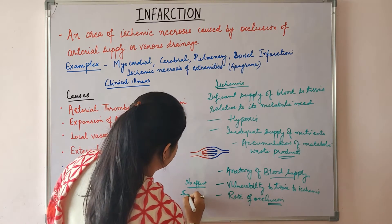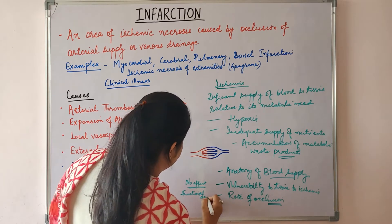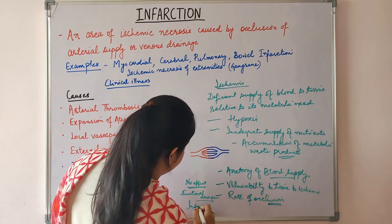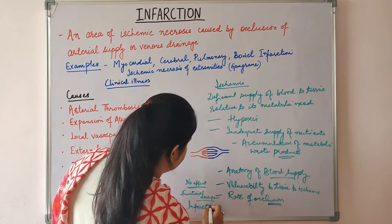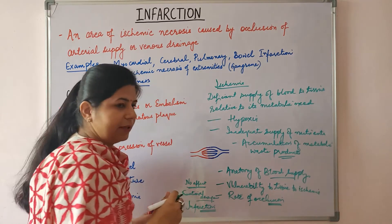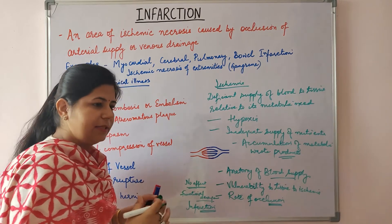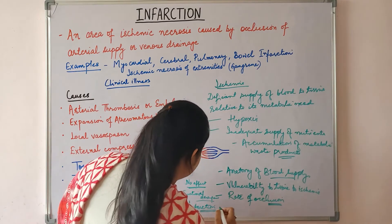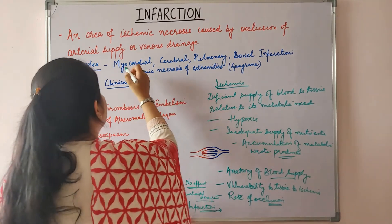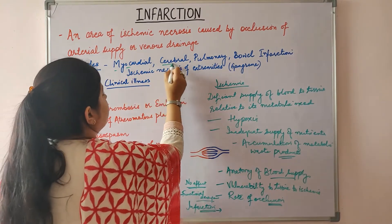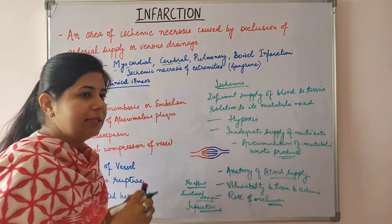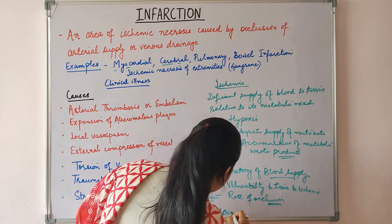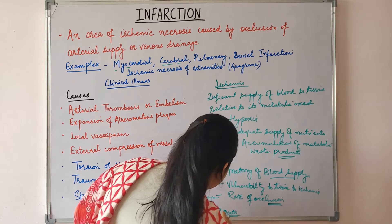Depending on these factors, ischemia may have no effect on the tissue, or there can be functional derangements, or it can lead to infarction — which is ischemic necrosis. In myocardial infarction and cerebral infarction, there is death of tissues, and sometimes there can be sudden death.